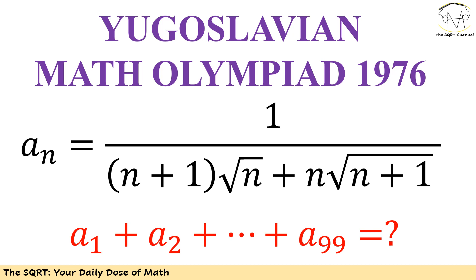In this problem I have a_n defined as 1 over (n+1)√n + n√(n+1).